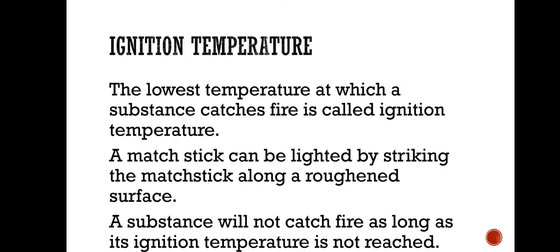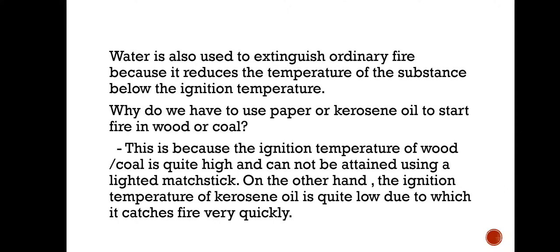For example, if a substance has an ignition temperature of 55 degrees Celsius, which we generally do not reach under normal climatic conditions — if a place has a maximum temperature of 40 degrees Celsius and a substance has a 55 degree Celsius ignition temperature, then it will not catch fire on its own until it attains the temperature of 55 degrees Celsius. So a substance will not catch fire as long as its ignition temperature is not raised.